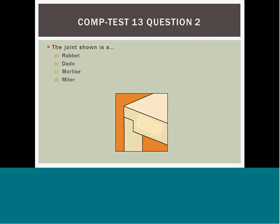Question 13: A joint profile question — is there a A) rabbet, B) dado, C) groove, or D) miter? Answer B — dado — is probably the best choice, as shown in the picture on the slide.